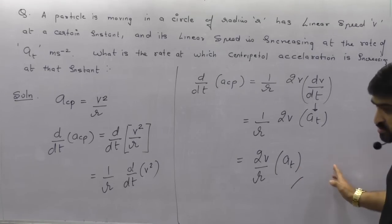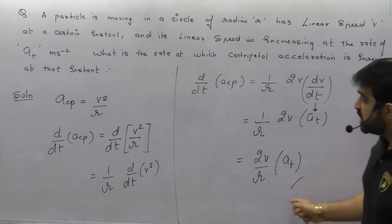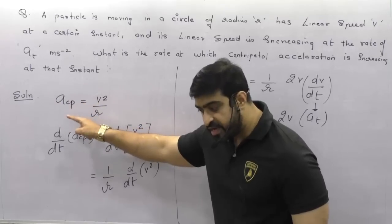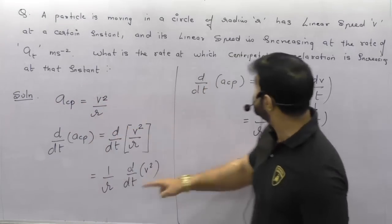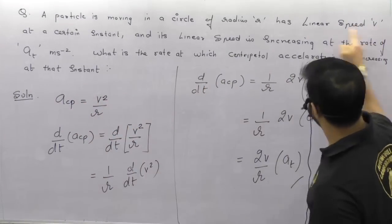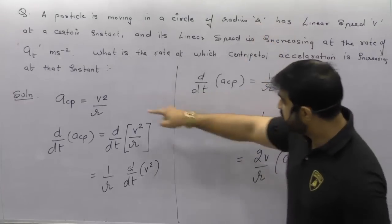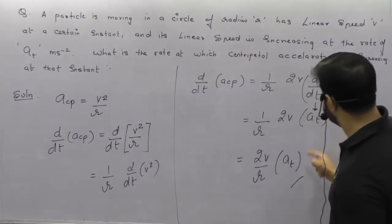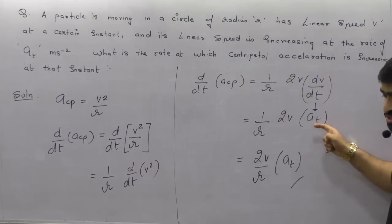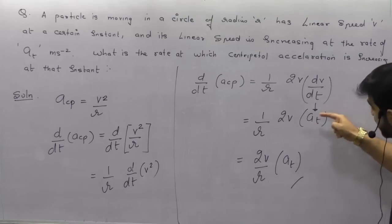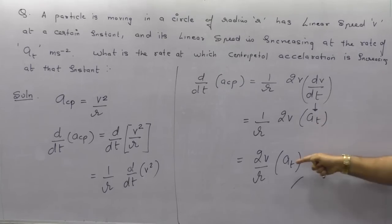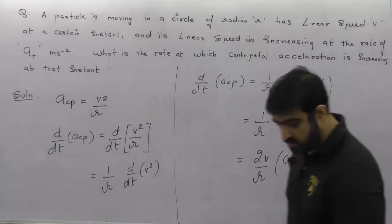They needed rate of change of centripetal acceleration. Why did I write the formula V²/R? Because they have given you V and R. A little differentiation of this with respect to time gives 2V·dV/dt, and dV/dt is A_T — tangential acceleration, which is the rate of change of magnitude of velocity.